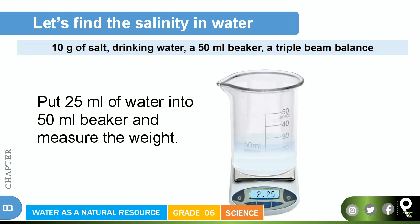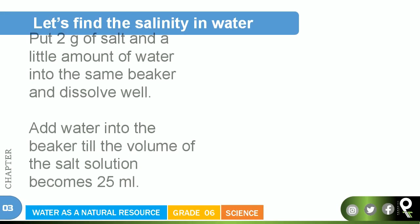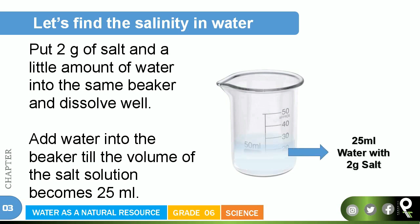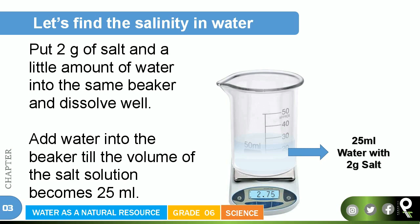When we measure the 25 milliliters of plain water, it gives around 2.25 grams. Next, we put 2 grams of salt with a little water into the same beaker, dissolve it well, and add water until the volume of the salt solution reaches 25 milliliters. When we weigh this salt solution, it comes to around 2.75 grams — a small but gradual increase in mass.